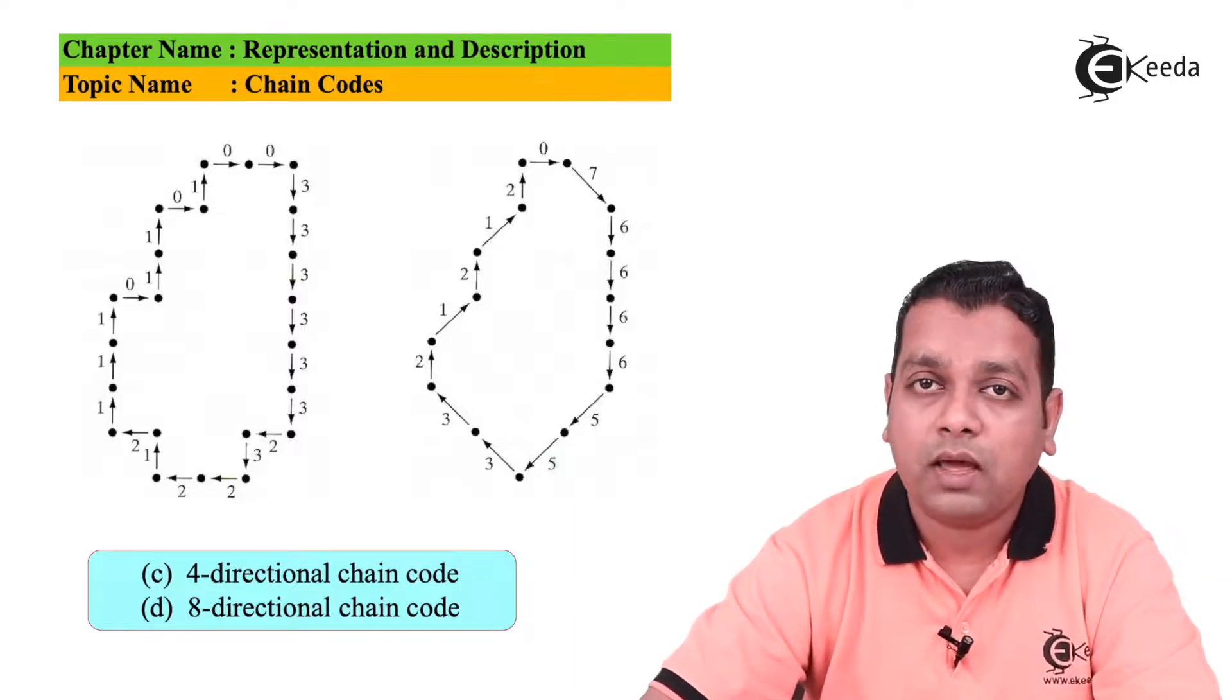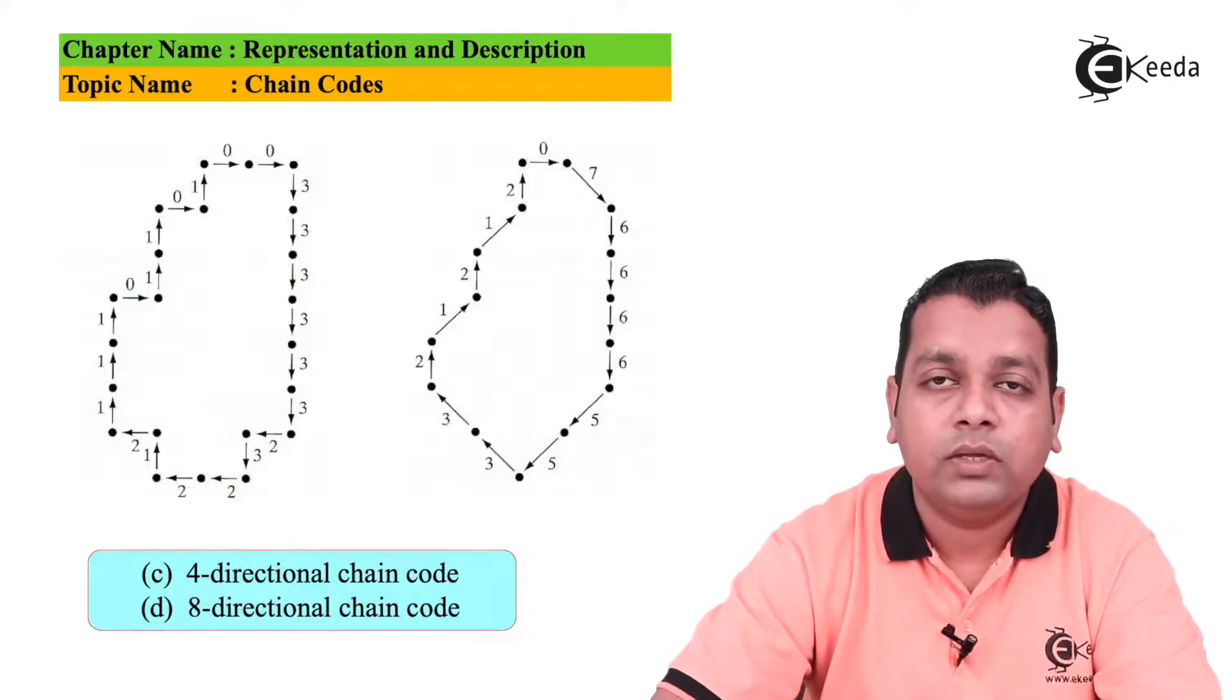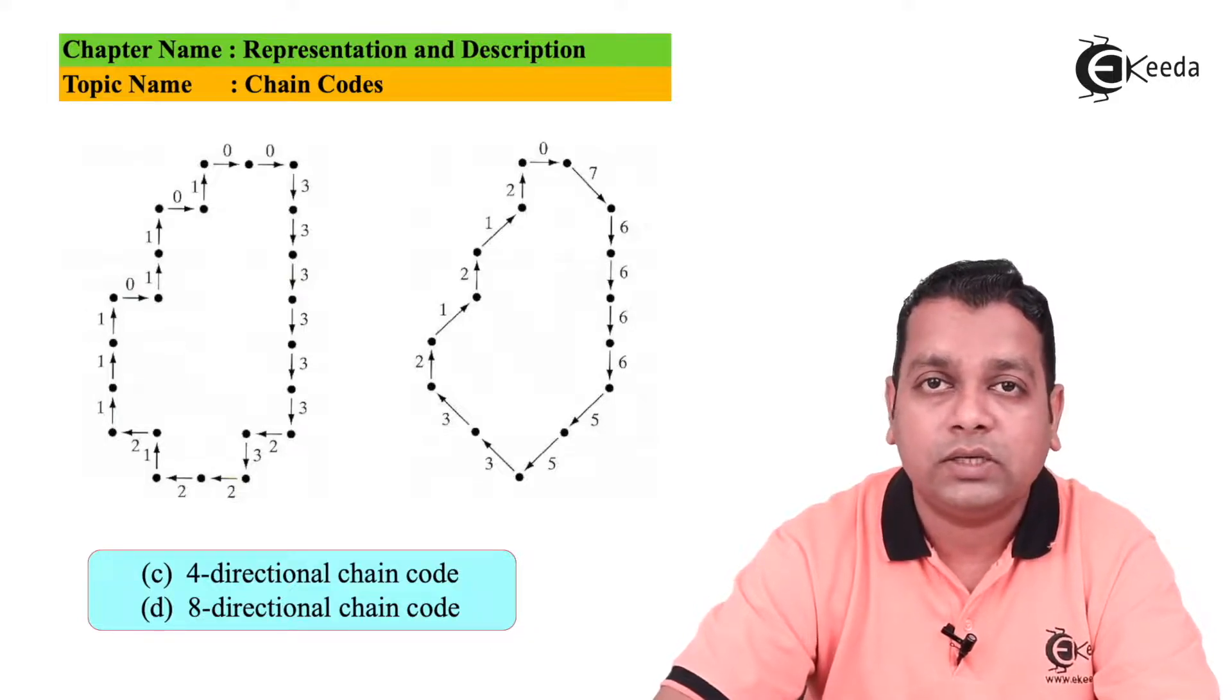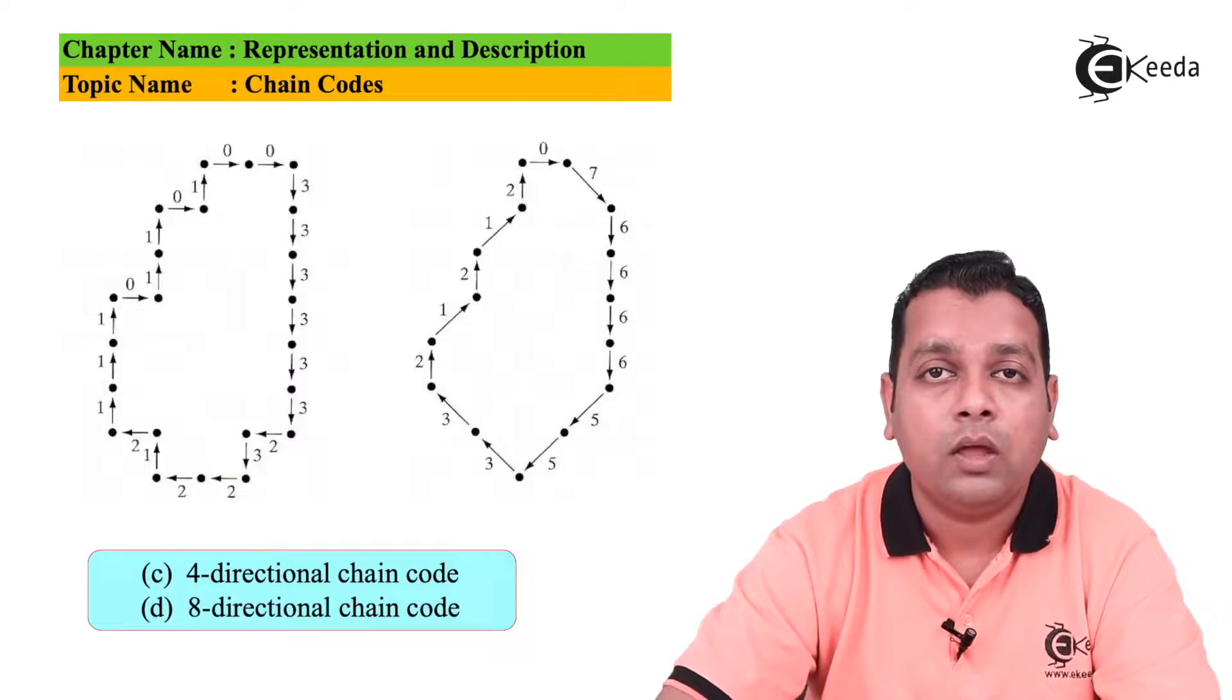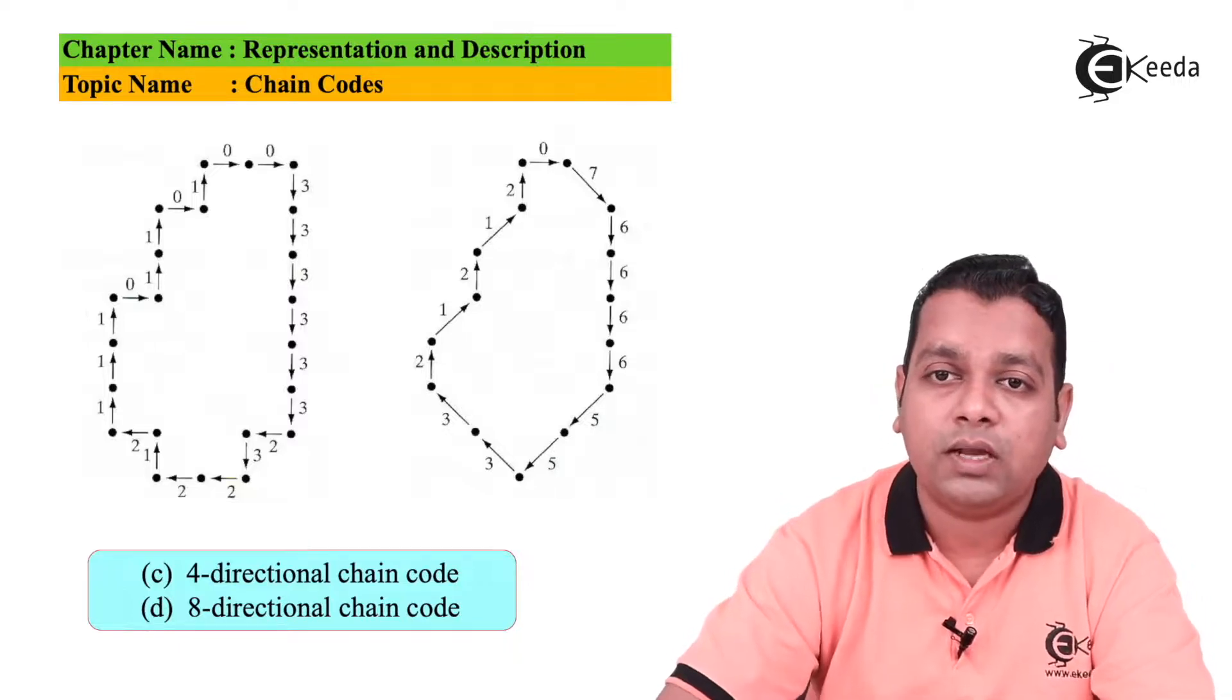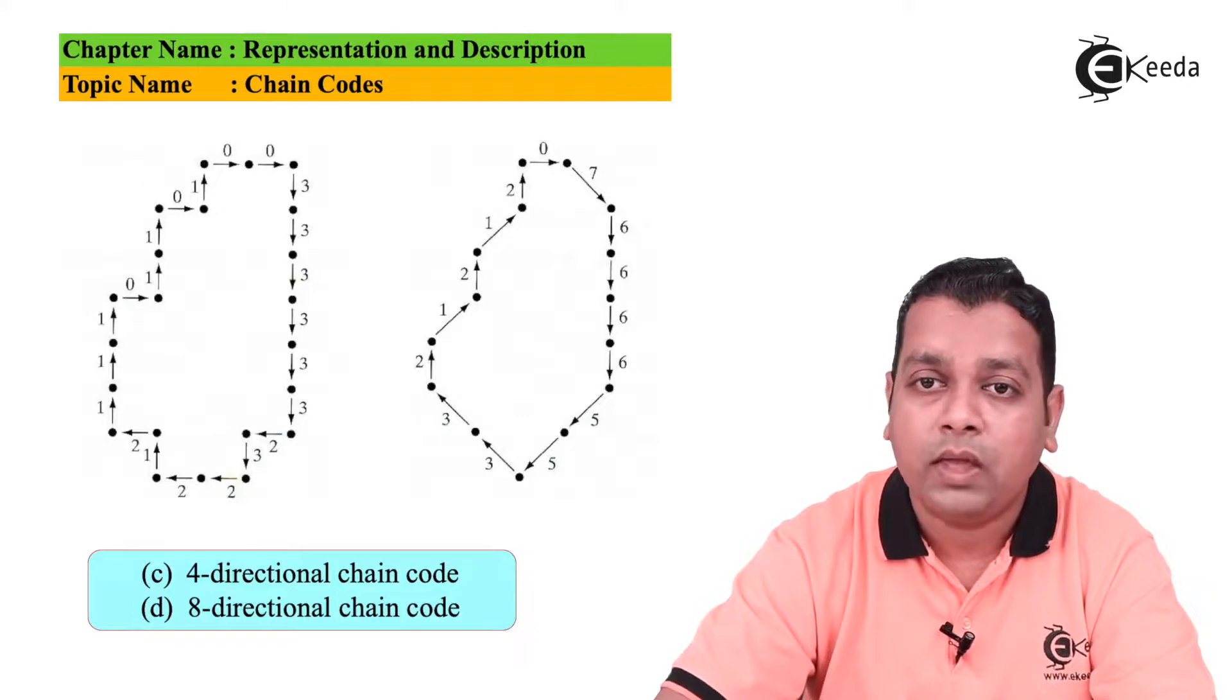Now if you take the case of 8 directional chain code some efforts in representation of the chain code will be minimized. The representation will be somewhat shorter. We again start at the top left corner with 0. After this 0 we can go with the representation of the digit 7 for this chain code as it is available with the 8 connectivity. Then we have 4 times 6 representing the downward direction. Then we have 5 representing the south and west direction 2 times. Then we have 2 times 3 representing the northwest directions. Then the upward direction can be represented by the digit 2. Then we have 1 2 1 2 and we are back to the original position.